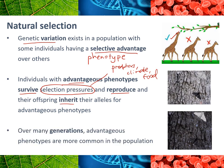The individuals with the advantages survive, reproduce, and their offspring inherit their alleles and genes for those phenotypes. Over many, many generations, we see more of the advantageous phenotypes because those are the individuals that survived, reproduced, and had offspring.